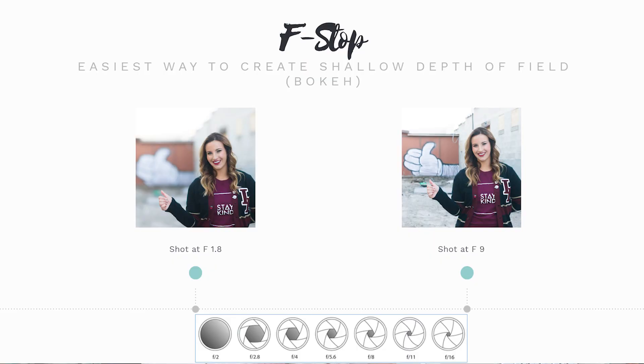This picture on the very left was shot at F1.8 and you can see it's blurry in the background. But I wanted that thumb sign to be in focus, so I changed my F-stop to F9. Now if I only shut down the F-stop and didn't change the other two pieces to the exposure triangle, that picture on the right would be completely dark — because I'm letting in less light. So then I need to change one of the other two pieces to the exposure triangle.